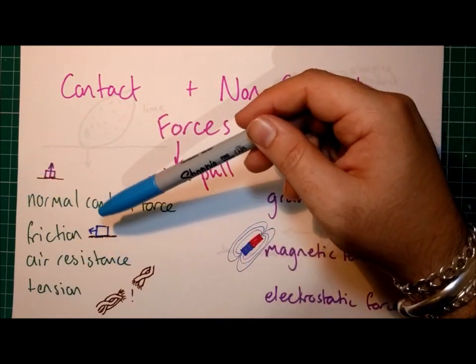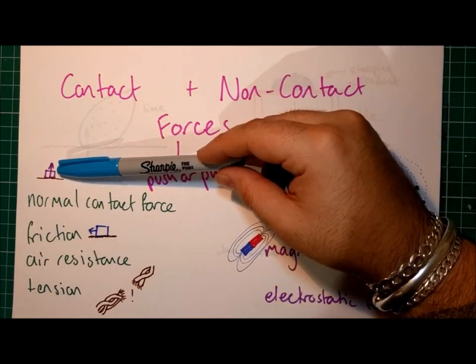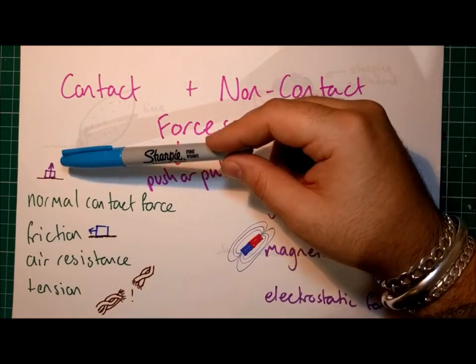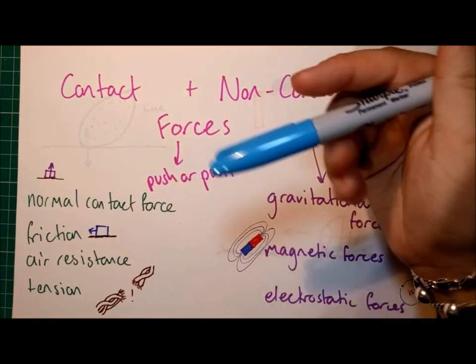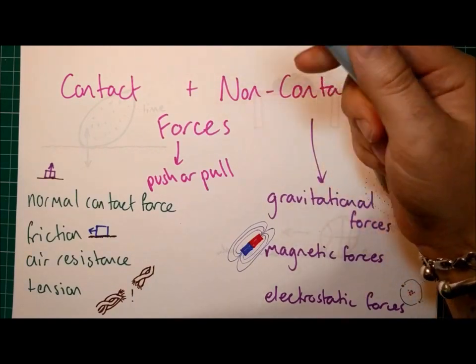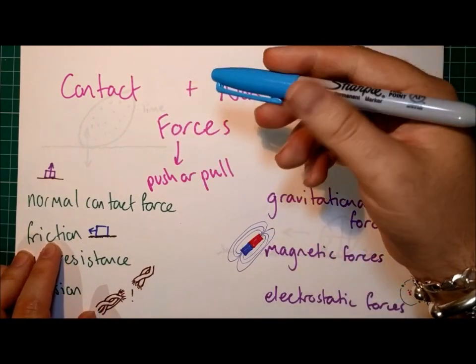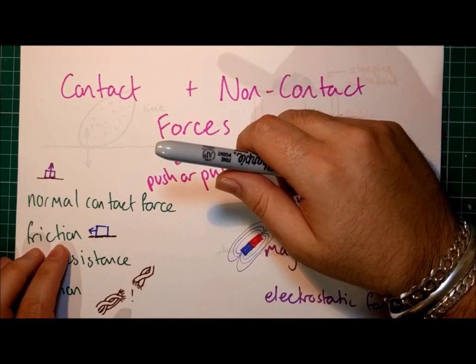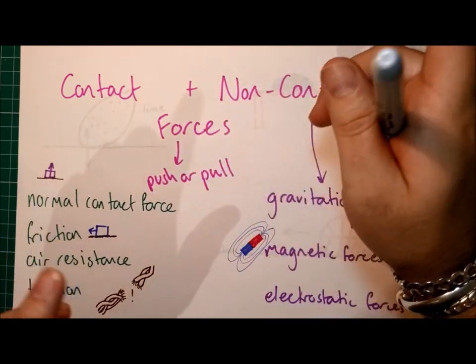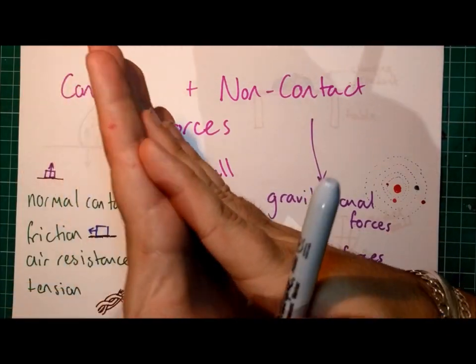It's called the normal contact force because it acts at a right angle to the surface, much like a normal line would if you think back to when you looked at reflection and waves in year eight. Then we've got friction. Again, friction is a contact force. It only acts when two objects are touching. And it's the force that resists motion as two objects pass each other.